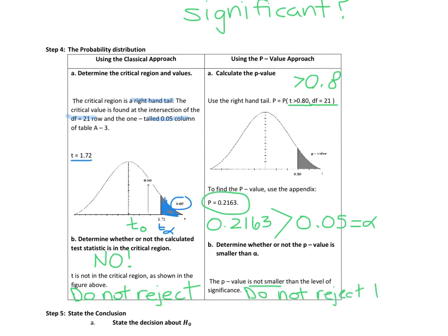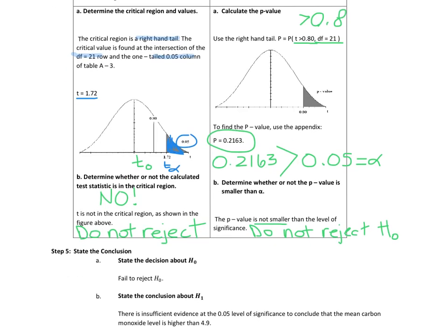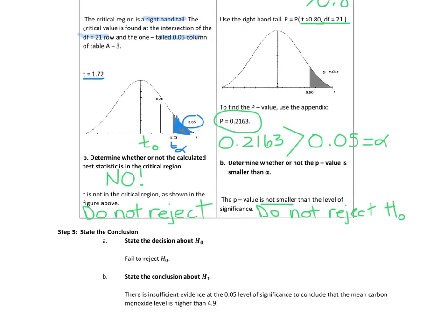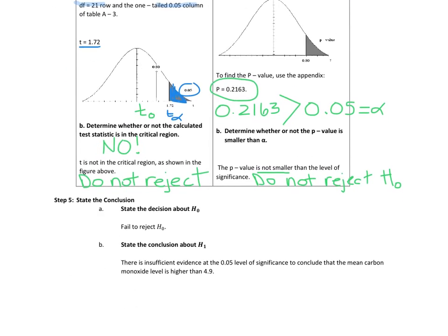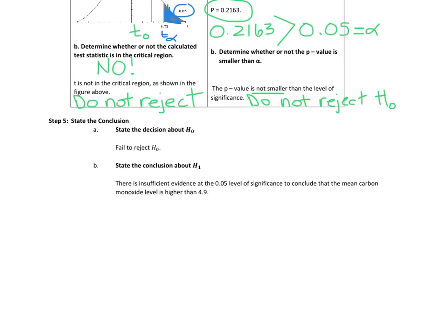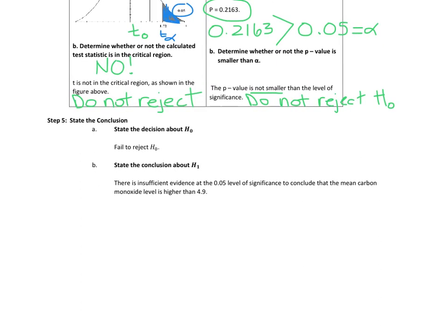And we are coming up with the same conclusion as before using the classical approach. The conclusion was we're not going to reject the null. So remember, you can use either the classical approach or the p-value approach. The p-value approach is normally a little bit easier because we have calculator functions that can do a lot of this for us. However you slice it, do not reject the null.